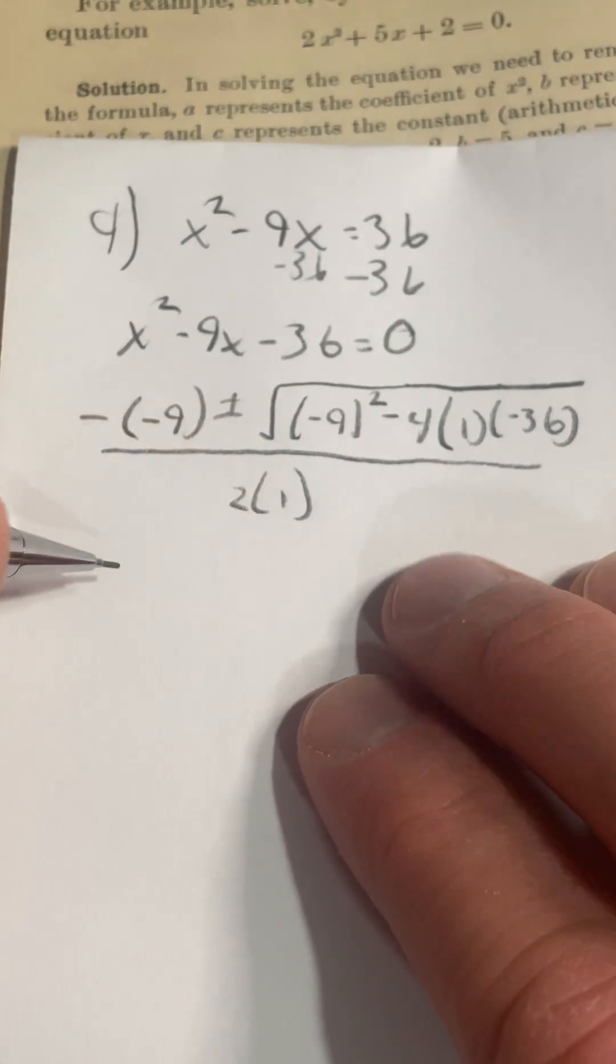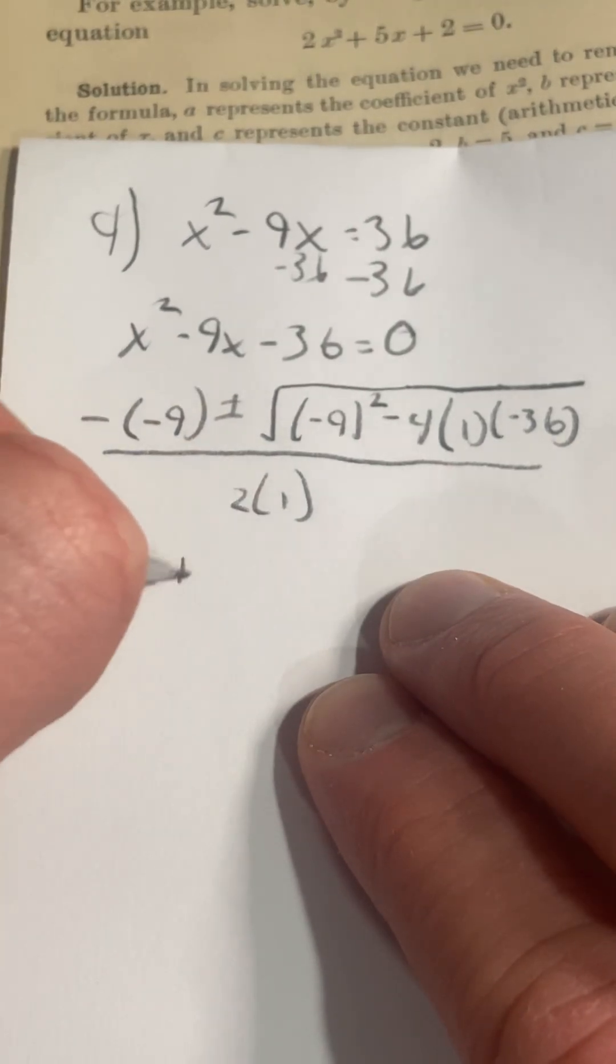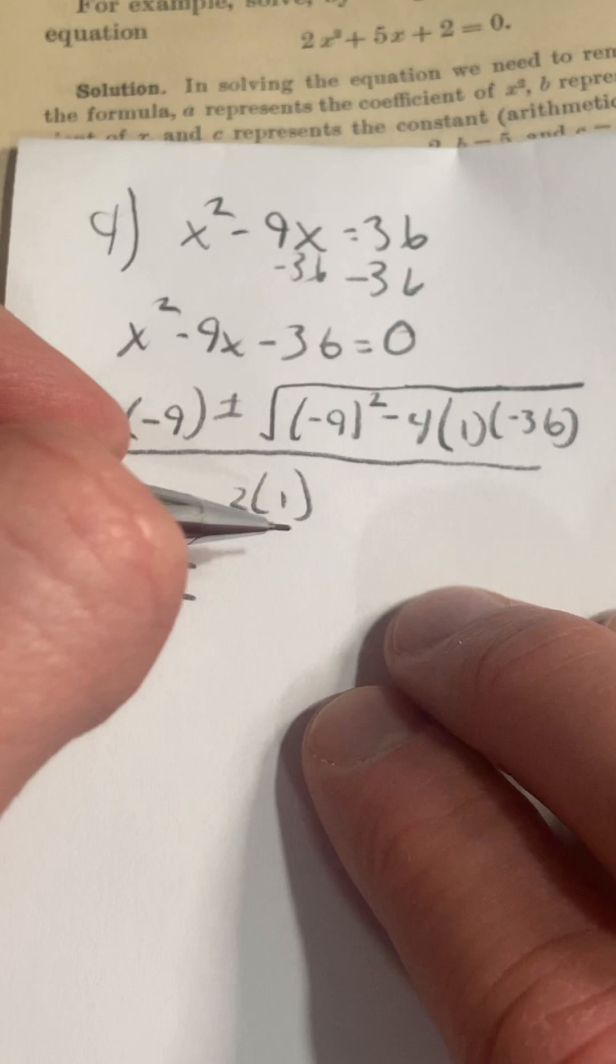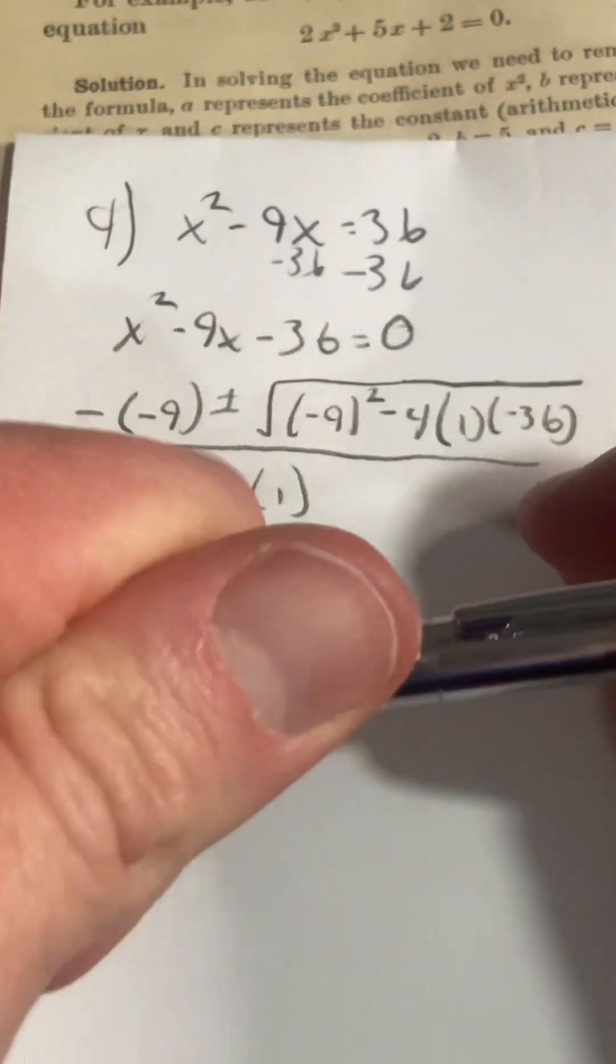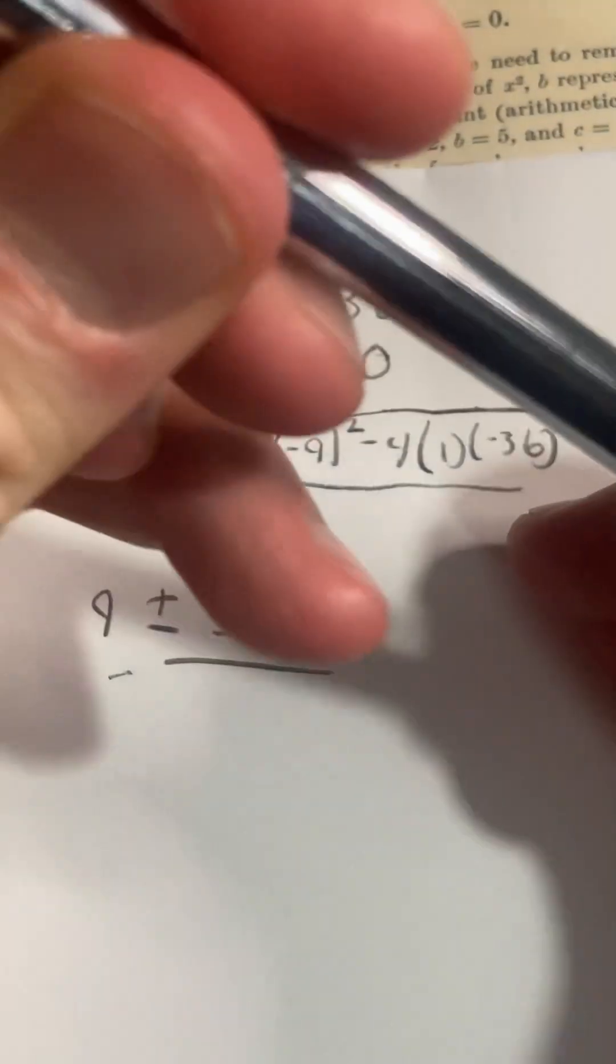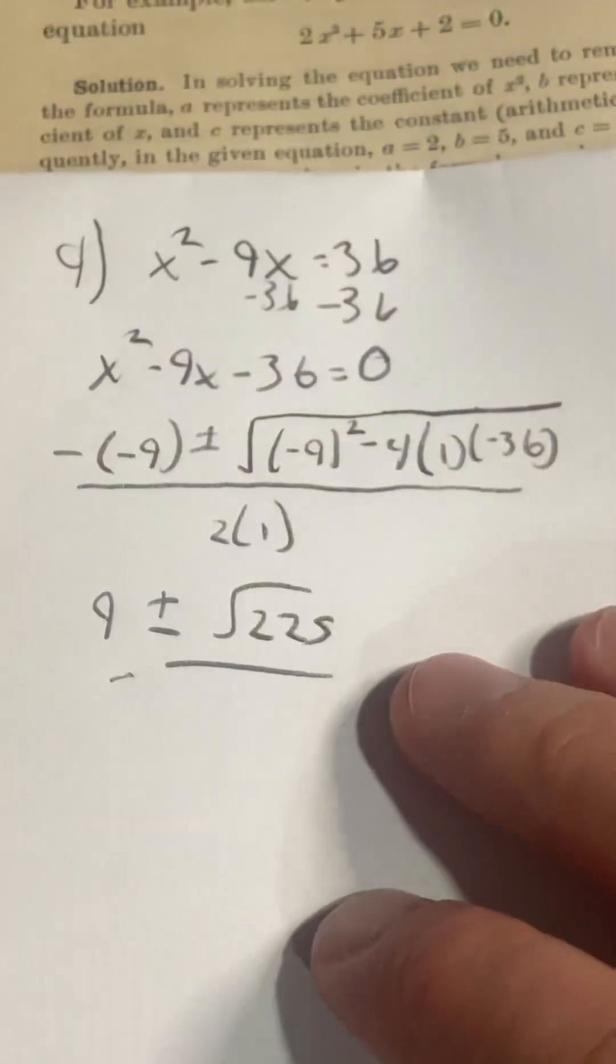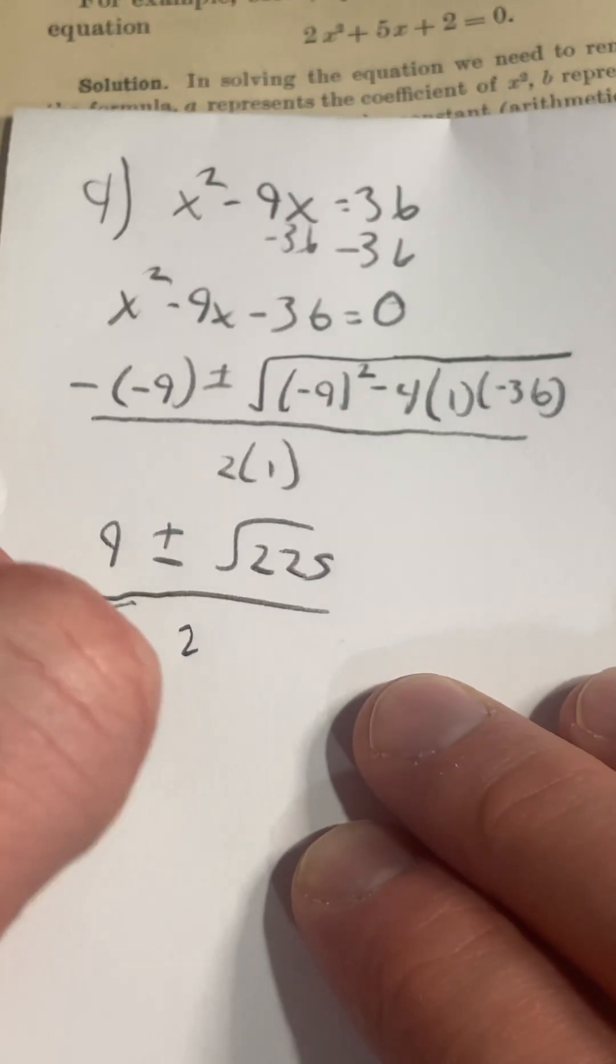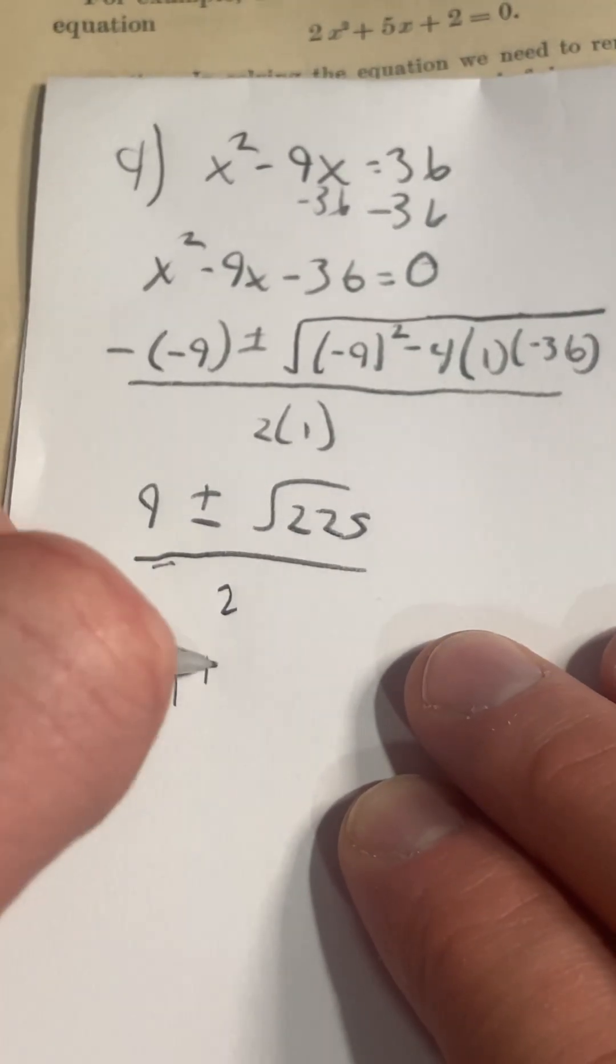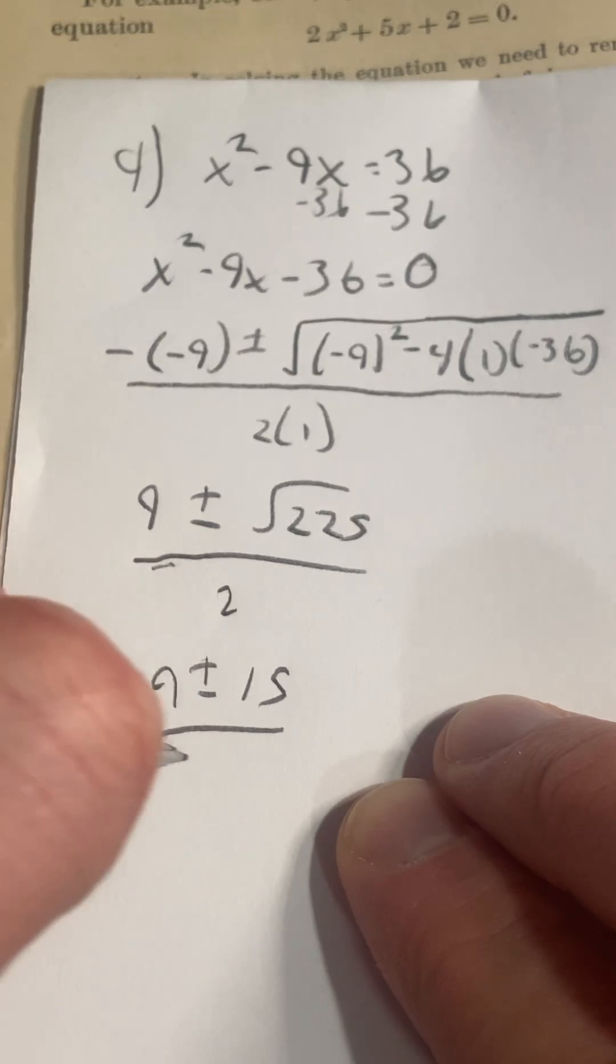And then I'll fast forward a little bit. This is going to be positive 9 plus minus, inside the radical you will get square root of 225, and then that's over 2. So 9 plus minus 15 over 2.